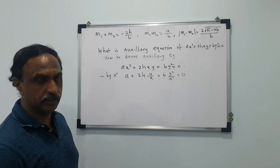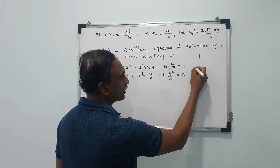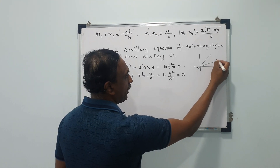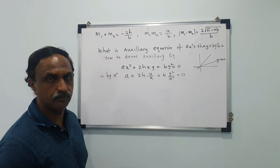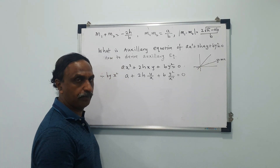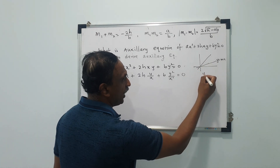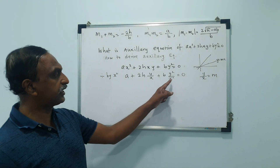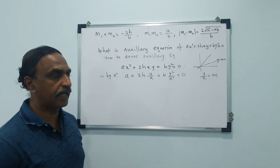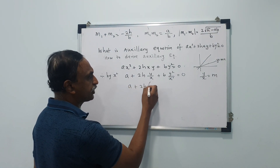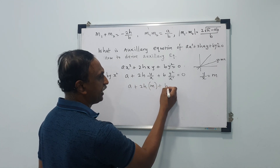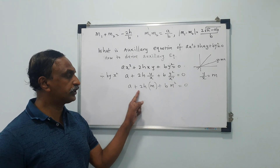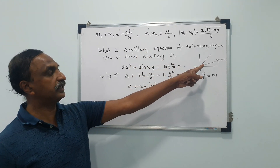One important thing to remember: every homogeneous equation represents a pair of lines passing through the origin. Whenever a line passes through the origin, y = mx is its equation. If I take any point on the line and divide the y-coordinate by the x-coordinate, you always get the slope. So y/x here is nothing but the slope m. Therefore, I can write a + 2hm + bm² = 0. This is a quadratic equation in m, and if I solve it, I get the slopes of the two lines.